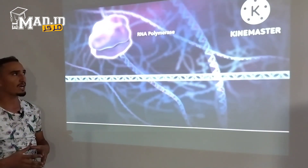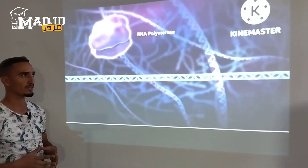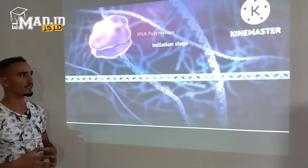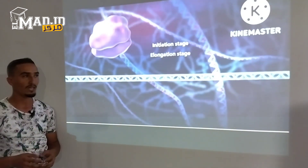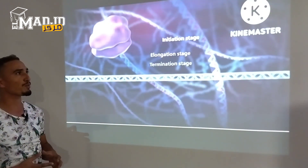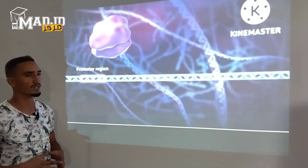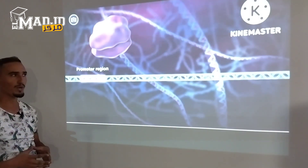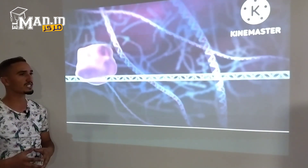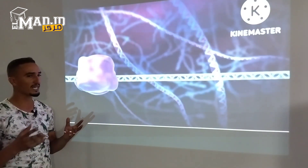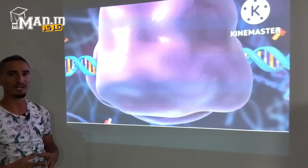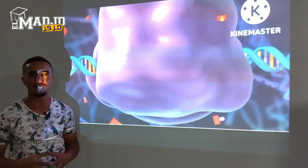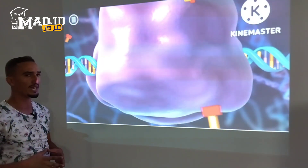This process occurs in three stages: initiation, elongation, and termination. During initiation, the promoter region of the gene functions as a recognition site for RNA polymerase to bind. This is where the majority of gene expression is controlled, by either permitting or blocking access to the site by the RNA polymerase.